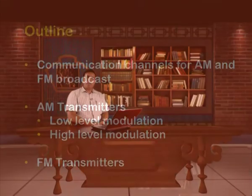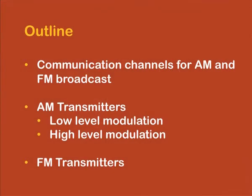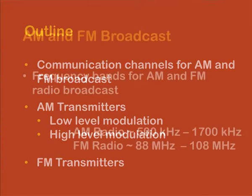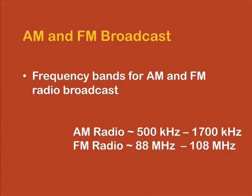Hello viewers, welcome to this part of the course. Today we are going to talk about the channel models which are used for AM and FM broadcast, and block level description of AM transmitters and FM transmitters. The FM and AM broadcast frequencies are in the range of 500 kHz to 1700 kHz for AM broadcast and 88 MHz to 108 MHz for FM broadcast.